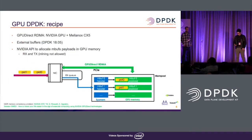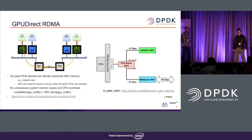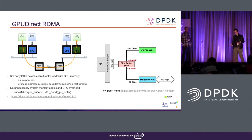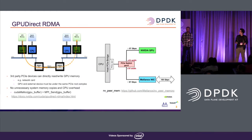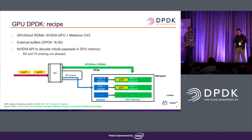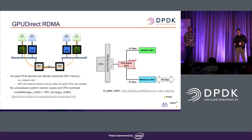GP Direct RDMA is a technology from NVIDIA. In a nutshell, with GP Direct RDMA, from a third-party device, you can basically read and write GPU memory from network cards — a third-party PCIe device — without the need for additional system memory copies or CPU involvement.